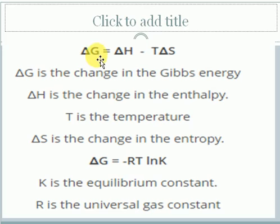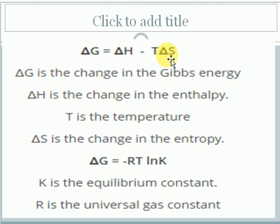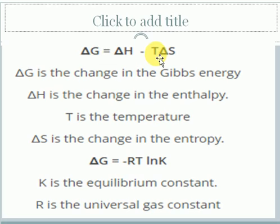ΔG stands for change in Gibbs free energy. ΔH stands for enthalpy change — negative for exothermic, positive for endothermic reactions. ΔS is entropy change — positive when the product is a gas, and negative when the product is a solid. The Gibbs free energy also depends on temperature: ΔG = ΔH − TΔS. When temperature increases, TΔS increases, so ΔG decreases.